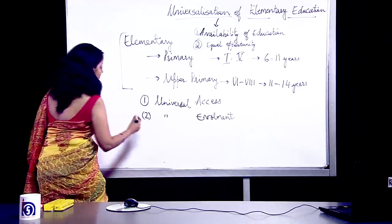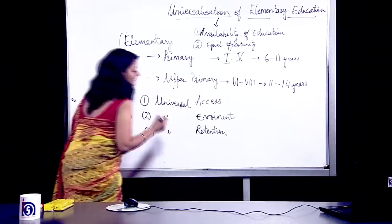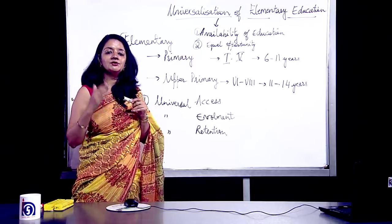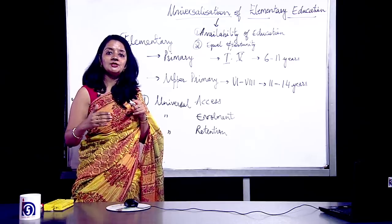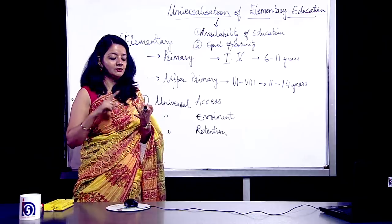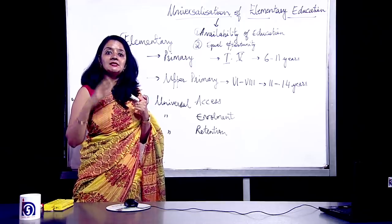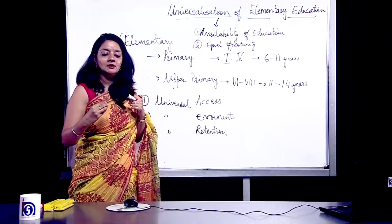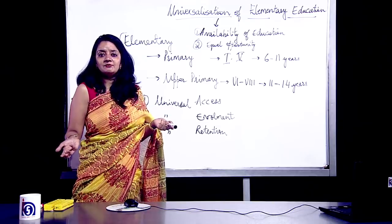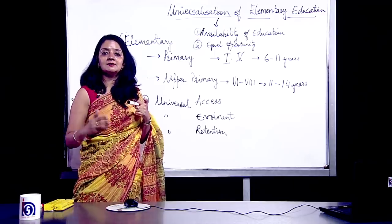The third one is universal retention. Universal retention means we are retaining the child — we would like to decrease the dropout rate. We want the child to complete his education and not leave after class five or eight, which usually happens with girls in rural areas because of sanitation problems, family pressure, or child marriage. This concept is trying to retain the child. At times a child cannot continue with education because he finds it boring and thinks it is of no use. So universal retention means we are trying to ensure the child continues and doesn't drop out.